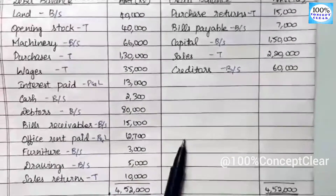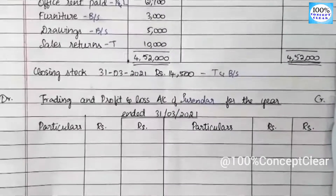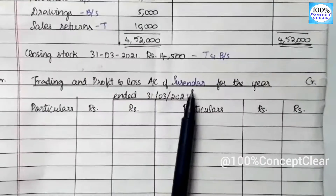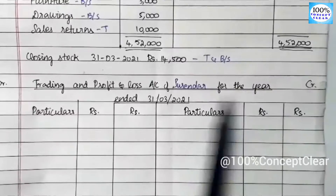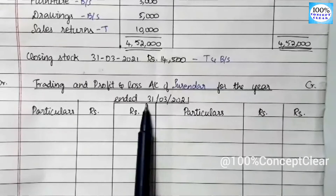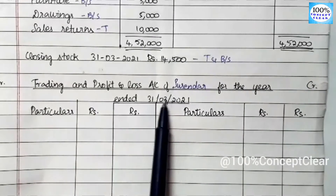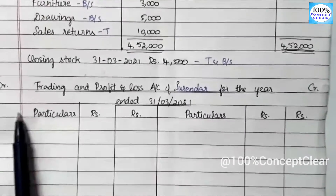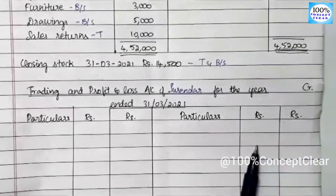Now we have to open a trading account. This is the format: Trading and Profit and Loss Account of Surendar, for the year ended 31.03.2021. In this account, the left-hand side is the debit side — that is the expenses side — and the right side is the credit side, that is the income side.